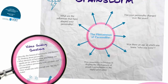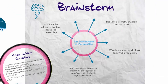The Phenomenon of Personality. To begin this video clip, think to yourself how you would define the term personality. What are the influences that have shaped your personality? Brainstorm a list of all the influences that have shaped who you are today — these could be cultural, educational, or familial. Rank these elements from most important to least important in the development of your personality. Was there an age at which you knew who you were? Has your personality changed over the years, or are there elements that have stayed the same? How powerful is technology in shaping the development of people's personalities in this digital generation? We will be sharing our lists in tutorial this week.